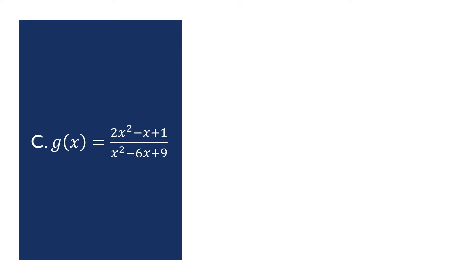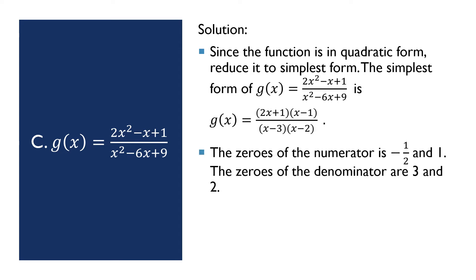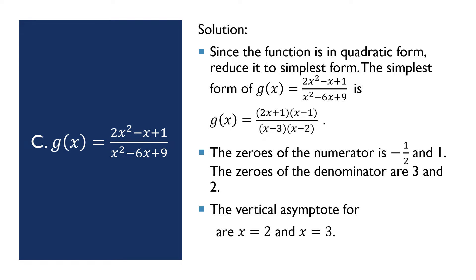Example number 3. We have the function g(x) = (2x² − x + 1) / (x² − 6x + 9). We reduce it to simplest form: g(x) = (2x + 1)(x − 1) / [(x − 3)(x − 2)]. The zeros of the numerator are −1/2 and 1, and the zeros of the denominator are 3 and 2. So the vertical asymptotes for this function are x = 2 and x = 3.